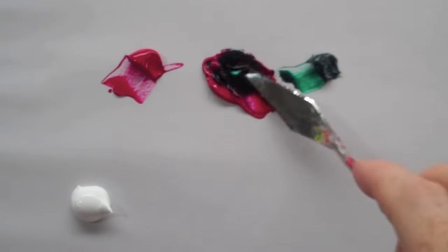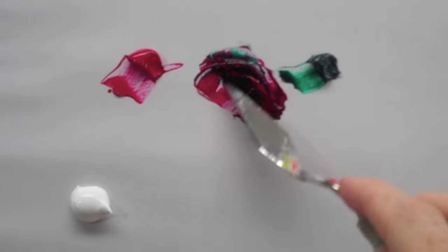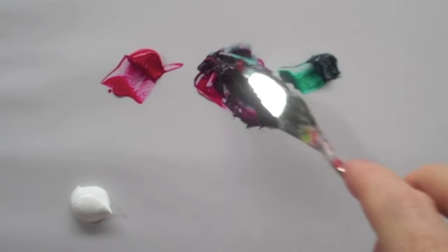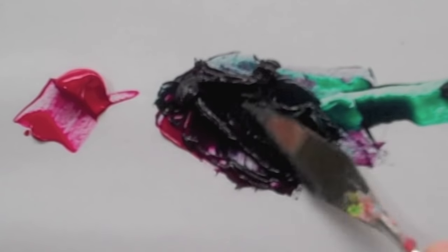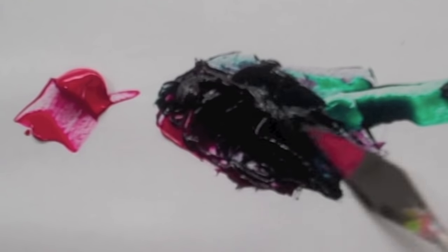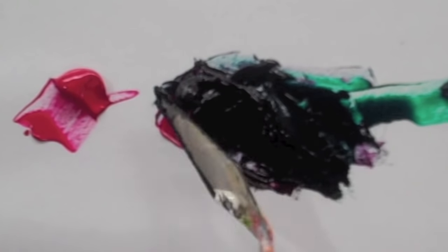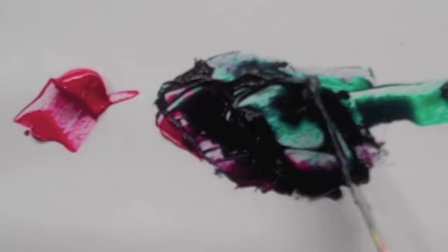The only problem is that phthalo green and quinacridone red are both very transparent pigments. If you look at the quinacridone, you can see how transparent it is. It's good for tinting colors down but not necessarily good for coverage.